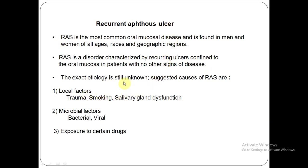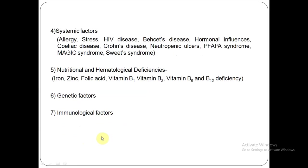The exact etiology is still unknown. Suggested causes of recurrent apthous stomatitis include local factors such as trauma, smoking, and salivary gland dysfunction; microbial factors like bacterial and viral diseases; exposure to certain drugs like antacids; and systemic factors like allergic reactions, stress, HIV, Behcet's disease or syndrome, hormonal influences, celiac disease, Crohn's disease, neutropenic ulcers, PFAPA syndrome, MAGIC syndrome, and Sweet syndrome.